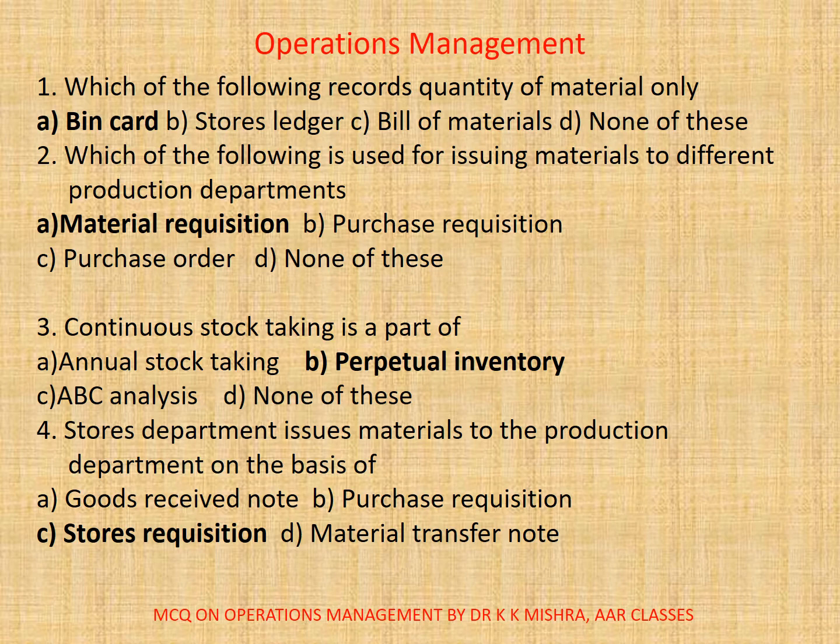3. Continuous stock taking is a part of A. Annual stock taking. B. Perpetual inventory. C. ABC analysis. D. None of these. The correct option is B. Perpetual inventory.